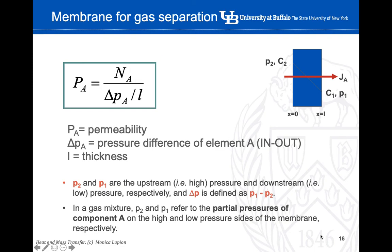How can we solve this? We need to first define a new parameter called permeability. Permeability is defined as the molar flux divided by delta P — the pressure difference of element A across the membrane — divided by the thickness. Delta P is the difference between P2 and P1, which are the upstream high pressure and downstream low pressure on both sides of the membrane. In a gas mixture, P2 and P1 are the partial pressures of component A on each side of the membrane. We will see in a minute how to incorporate this permeability term into the equation.